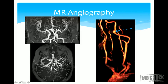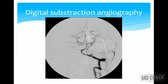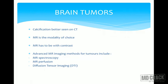MR angiography images of the intracranial vessels — vertebral arteries, basilar artery, ICA, MCA, and anterior cerebral arteries — can be obtained without contrast injection. In one patient, MR angiography of the neck vessels revealed a small fusiform, non-thrombosed aneurysm. Again, digital subtraction angiography remains the modality of choice for final evaluation of AVMs and aneurysms.